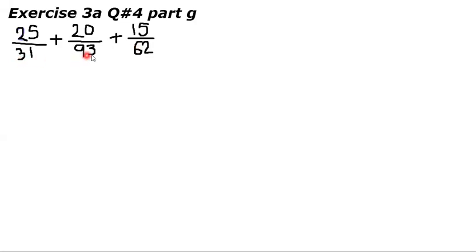First we have to make their denominators common or same and how we can make the denominators same by taking the LCM of the denominators. We will take the LCM of 31, 93 and 62 and when we will take its LCM it equals to 186.